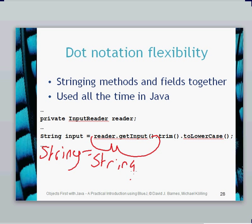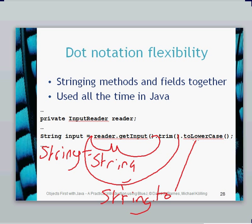First, we need to work out the type. If you look in the input reader class, you'll see that returns a type string. We can then call the trim method on string, and you'll see that returns a type string. And then with string.toLowerCase, you'll see that also returns a type string.